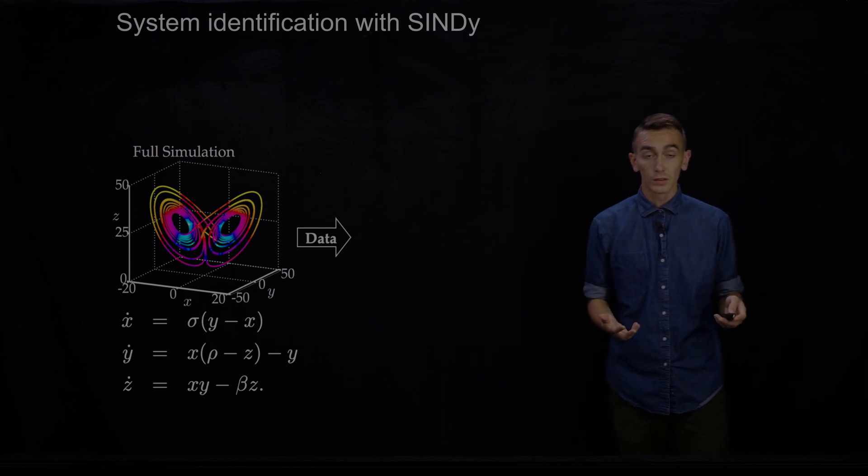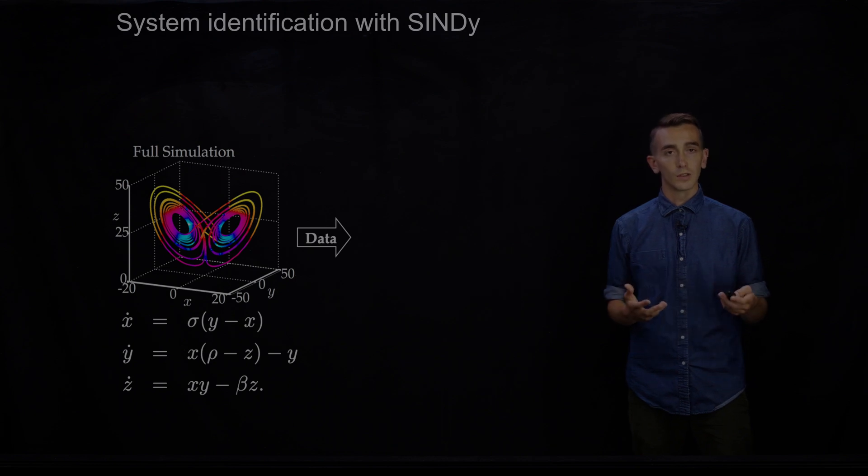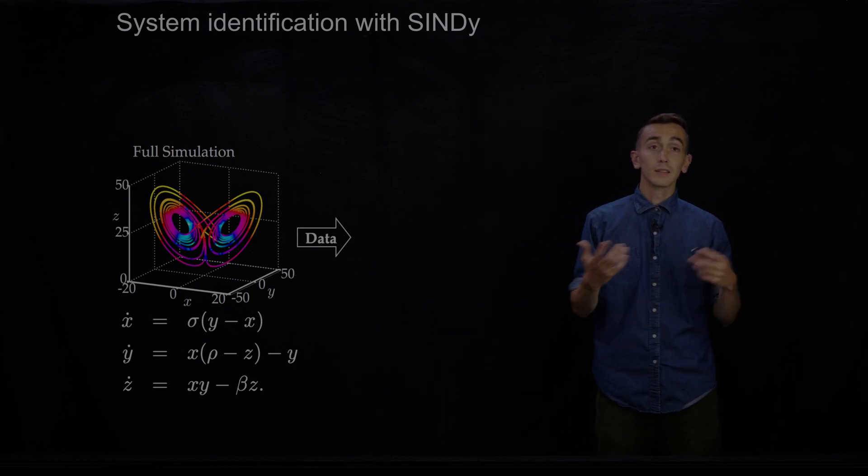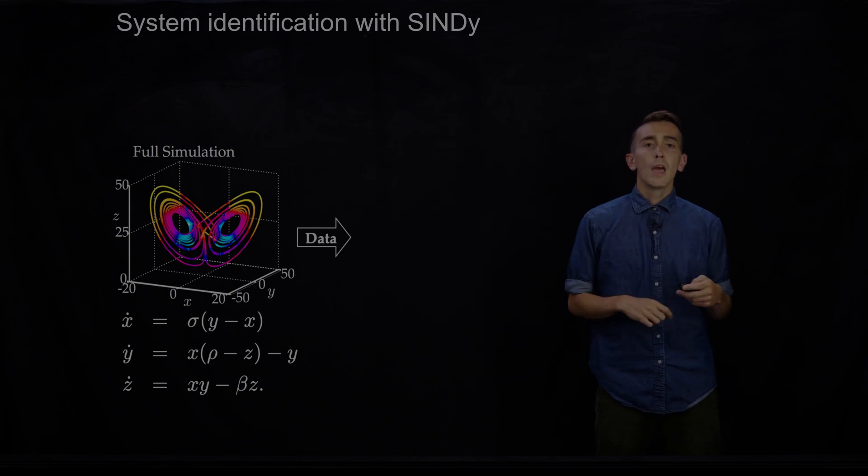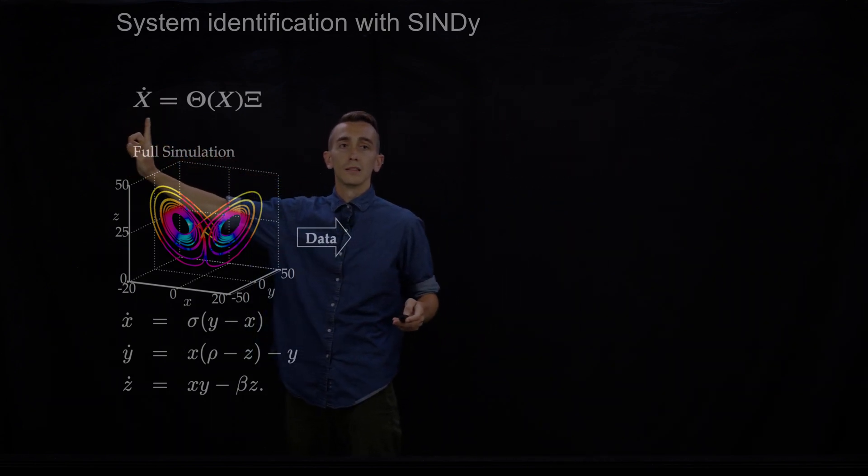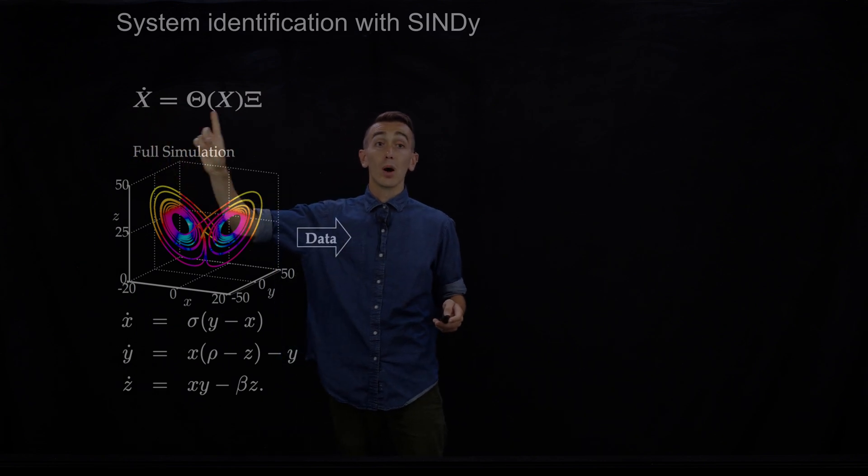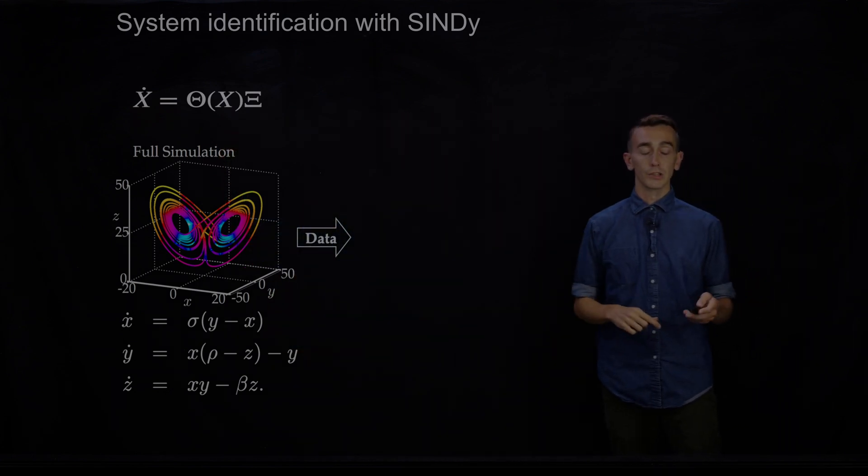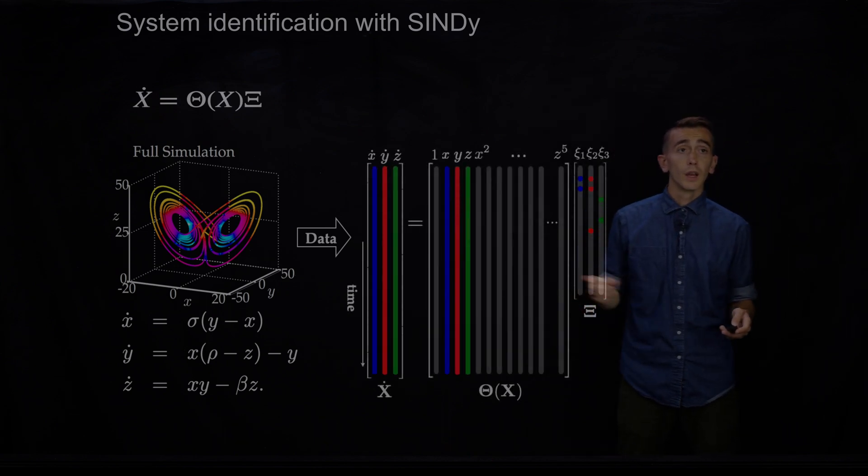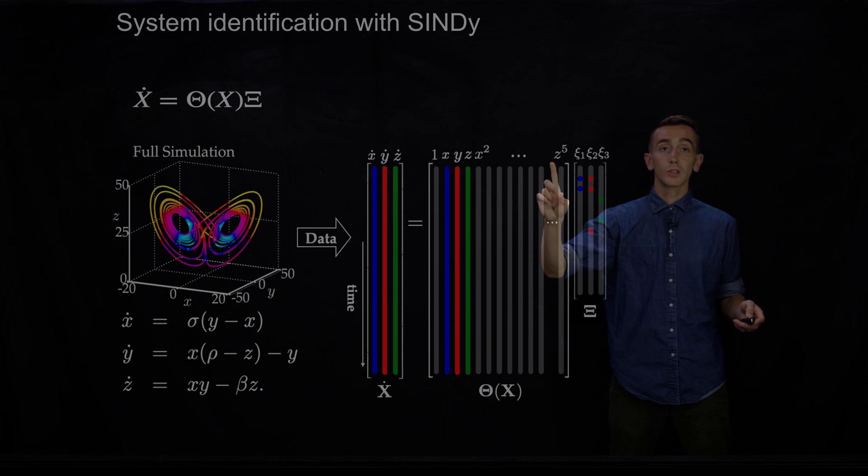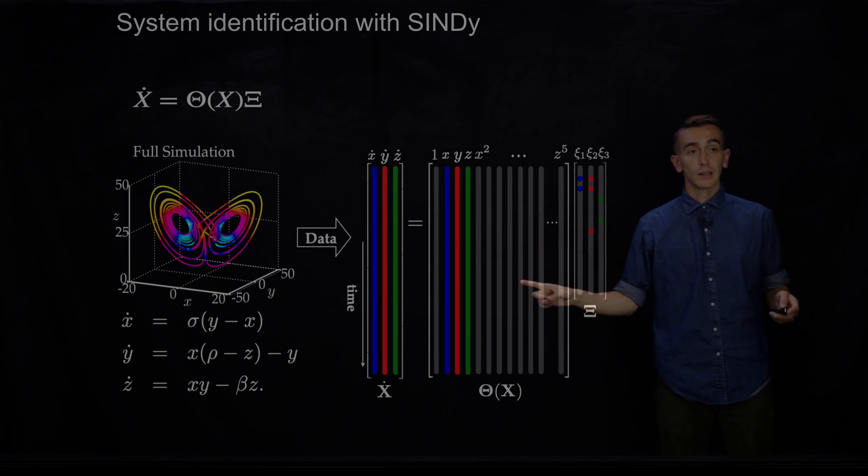I encourage you to look at Steve Brunton's videos because he was sort of the originator and describes this in a lot more detail. But basically the idea is you have some system. So here we have the Lorenz attractor. We take some data. We basically measure this at a bunch of points. And then what we do is we build, so we've taken some measurements which are in this X dot. And then we build some candidate library of possible terms that could be on the right hand side here and use sparse regression to figure out, okay, what should this right hand side be? And that will give us a system of ODEs or PDEs for how our measurements are evolving. In the case of Lorenz, what we can imagine is we build some big library where it's constant, linear, and all the way up to quintic polynomial terms in X, Y, and Z.